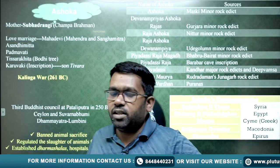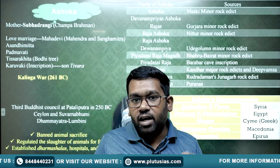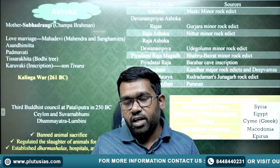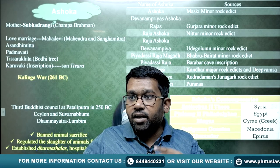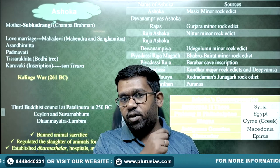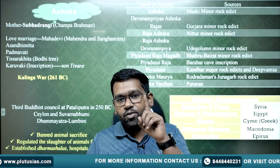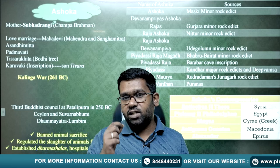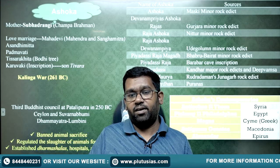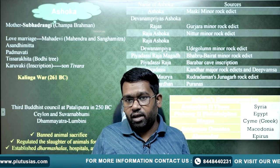Bindusara became king and captured most of Southern India. He was followed by his son Ashoka. According to the Deepvansha, Ashoka killed 99 of his brothers. When his father died in 273 BC, Ashoka took 4 years to reach Pataliputra, killing his 99 brothers, and finally became king in 269 BC. He then captured Kalinga — the only remaining province — and it is said about one lakh people died in that battle.